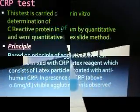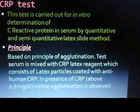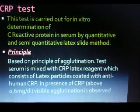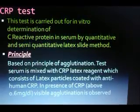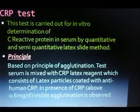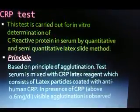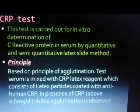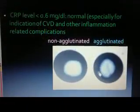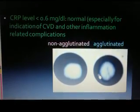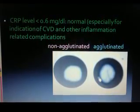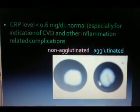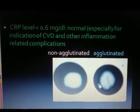The CRP test is carried out for the in vitro determination of C-reactive protein in serum by quantitative and semi-quantitative latex slide method. It is based on the principle of agglutination: test serum is mixed with CRP latex reagent, which consists of latex particles coated with anti-human CRP. In the presence of CRP above 0.6 mg/dL, physical agglutination is observed. A CRP level less than 0.6 mg/dL is considered normal.